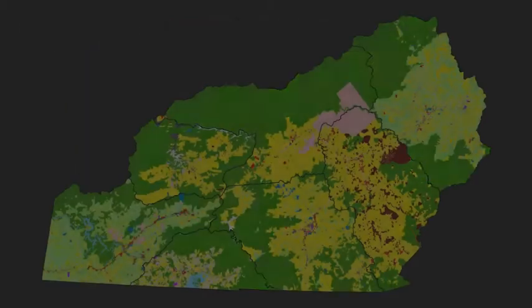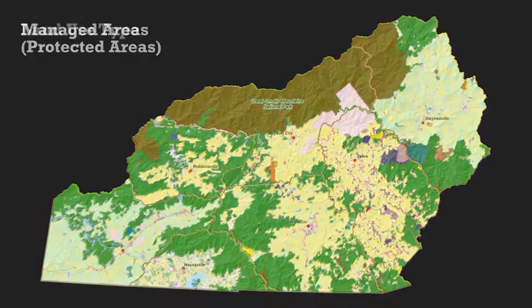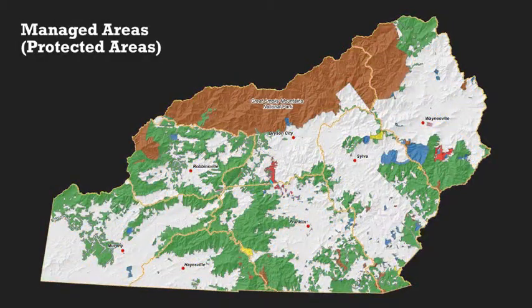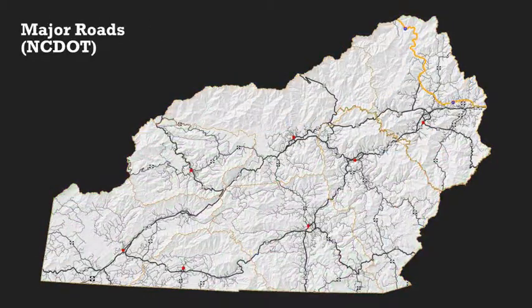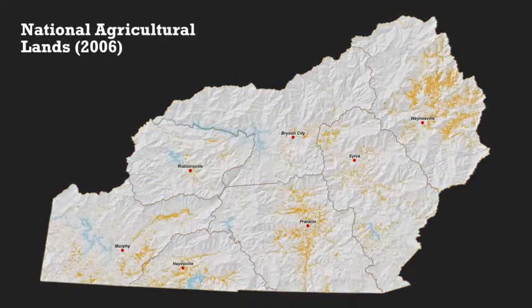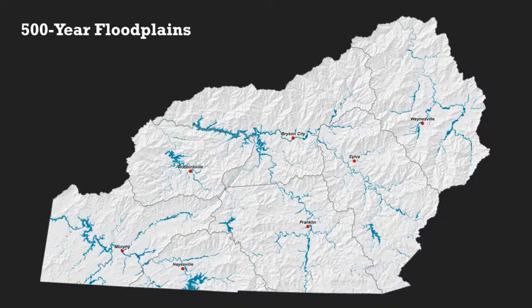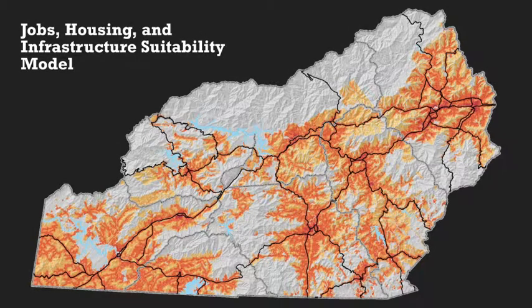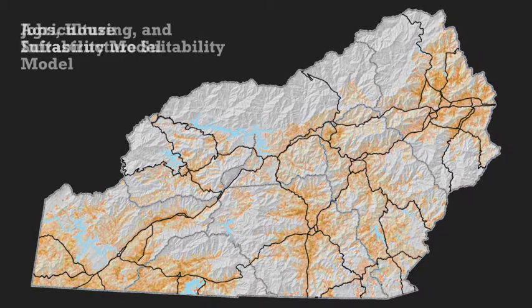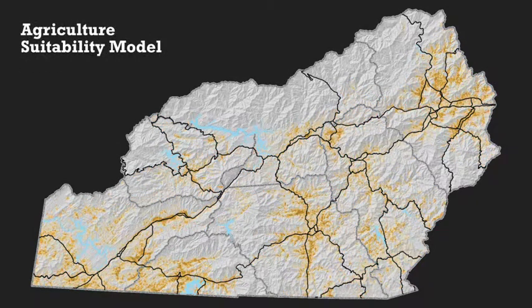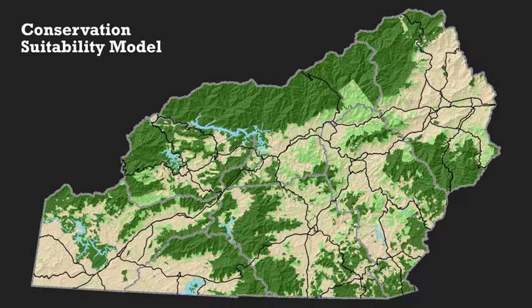Factors examined include existing land use, lands managed for conservation, existing roadways, agricultural lands, and surface slope and floodplains, among many others. The result of the Optin suitability analysis was three maps: one for urban suitability, one for agricultural suitability, and one for conservation suitability.